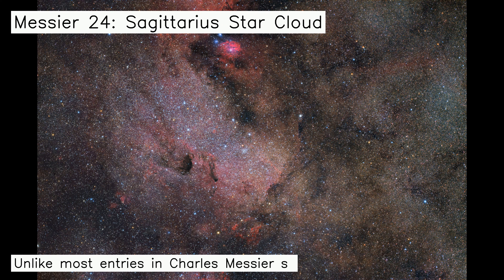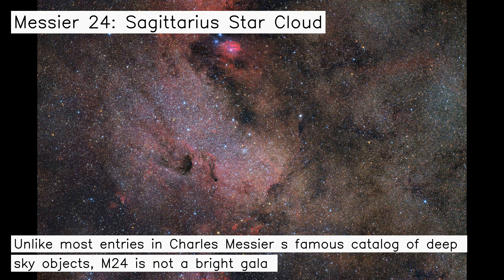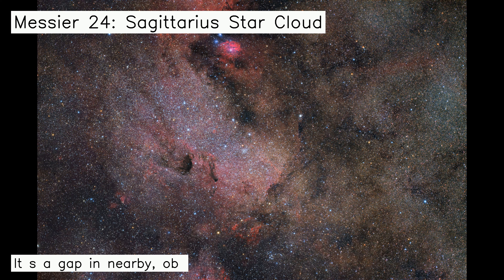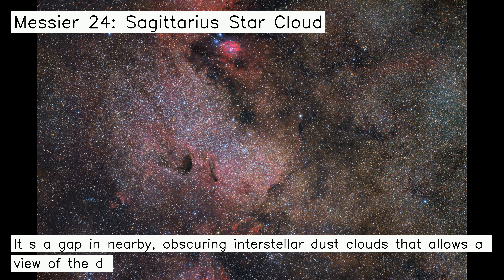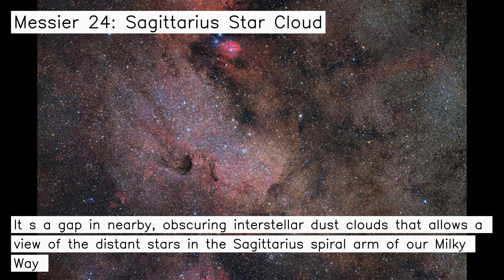Unlike most entries in Charles Messier's famous catalog of deep sky objects, M24 is not a bright galaxy, star cluster, or nebula. It is a gap in nearby obscuring interstellar dust clouds that allows a view of the distant stars in the Sagittarius spiral arm of our Milky Way galaxy.